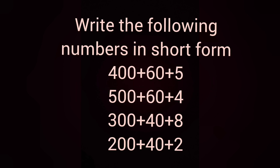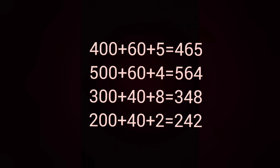Next, write the following numbers in short form. Short form of 400 plus 60 plus 5 is 465. Short form of 500 plus 60 plus 4 is 564. Short form of 300 plus 40 plus 8 is 348. Short form of 200 plus 40 plus 2 is 242.